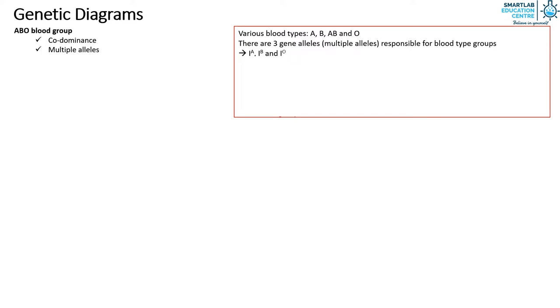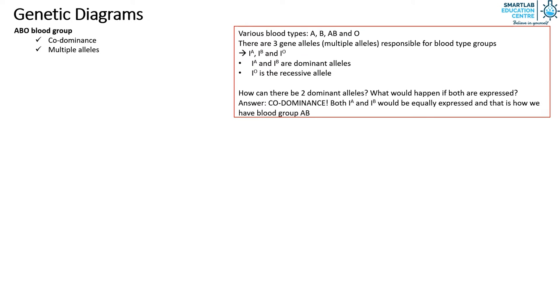Since this is unlike what we have seen so far whereby two alleles are responsible for a particular phenotype, this is known as multiple alleles. Allele IA and IB are dominant alleles whereas IO is the recessive allele. How can there be two dominant alleles and what would happen if both are expressed? The answer is that there would be codominance. Both IA and IB would be equally expressed and thus give rise to blood group AB.